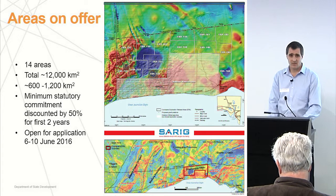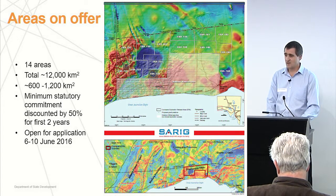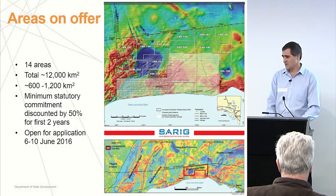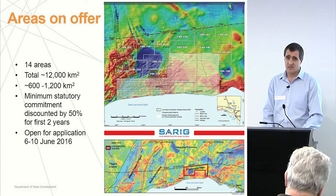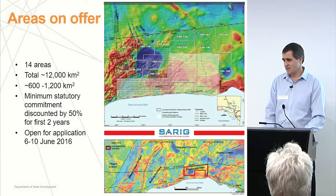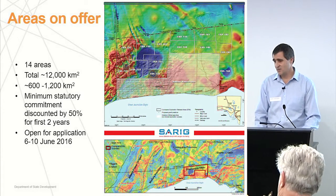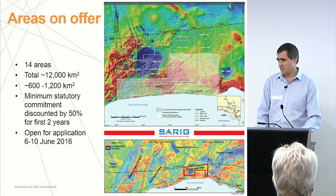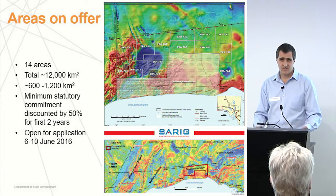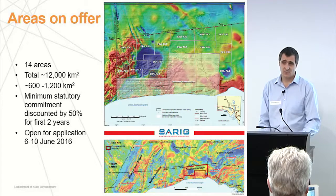We've released a large area of land in the far west of South Australia. There are 14 areas in total as shown on the map, totalling 12,000 square kilometres. They range in size from 600 to 1,200 square kilometres. Recognising that it's a frontier area and the difficulties in the industry at the moment, we've reduced our minimum expenditure commitment by 50% for the first two years as an incentive to apply for the areas. Applications will be open from the 6th to the 10th of June.